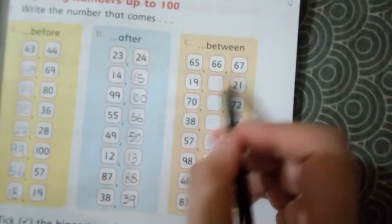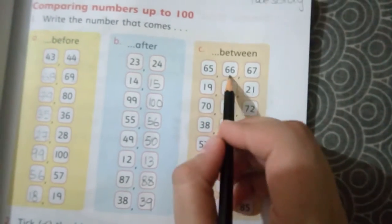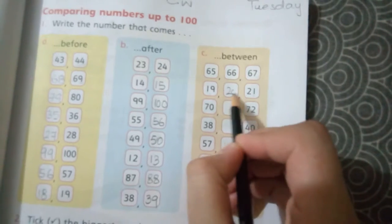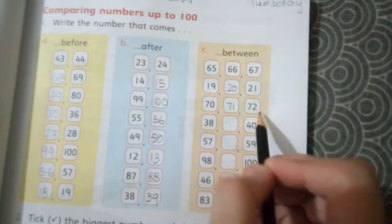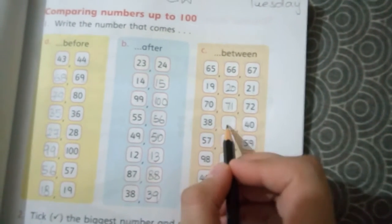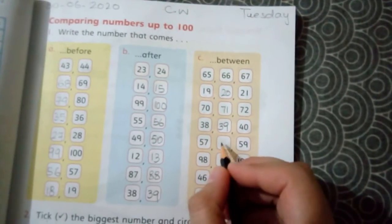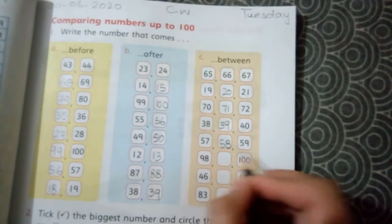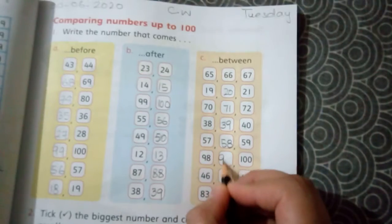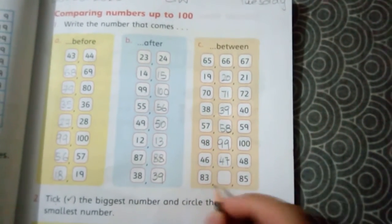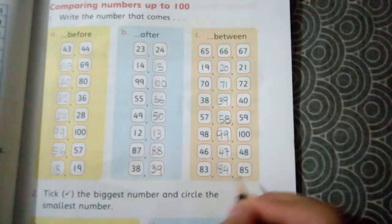What comes between these two numbers? Between 65 and 67 is 66. Between 19 and 21 is 20. Between 70 and 72 is 71. Between 38 and 40 is 39. Between 57 and 59 is 58. Between 98 and 100 is 99. Between 46 and 48 is 47. Between 83 and 85 is 84.